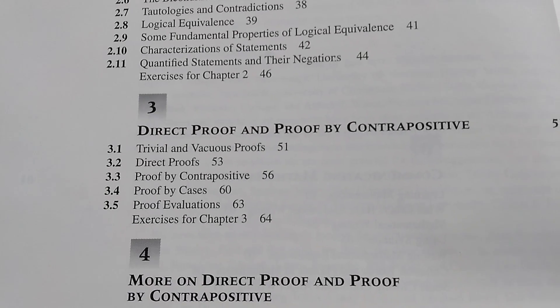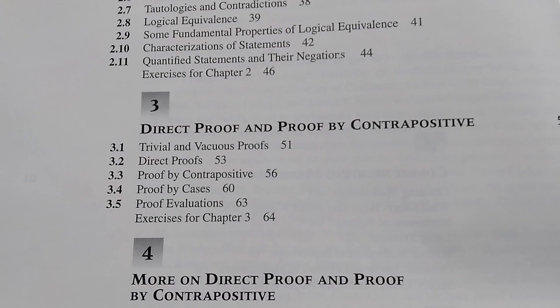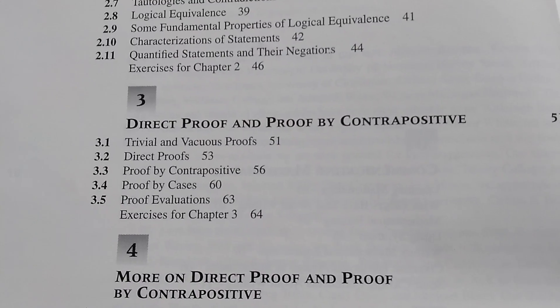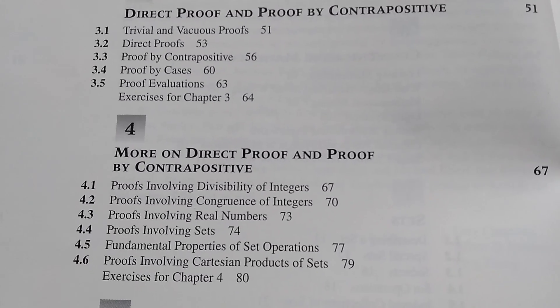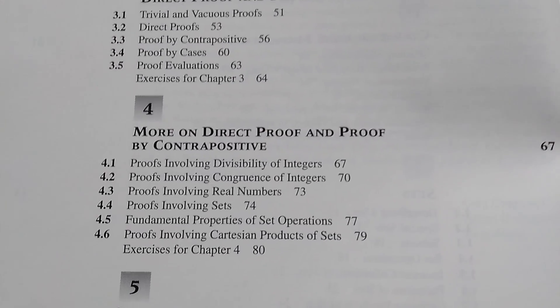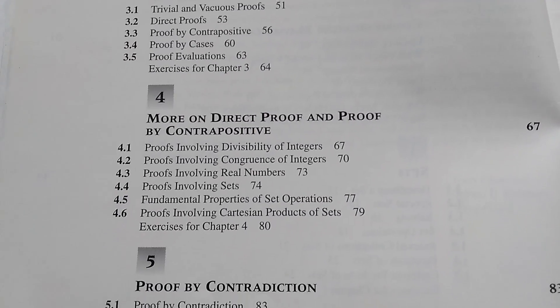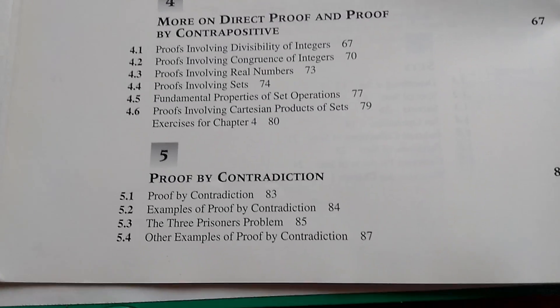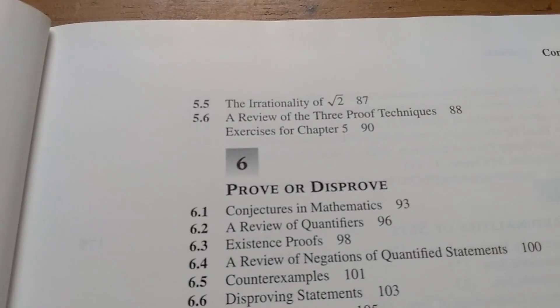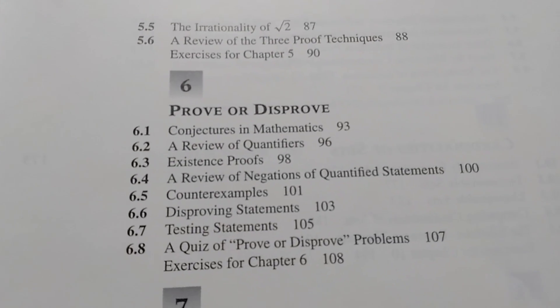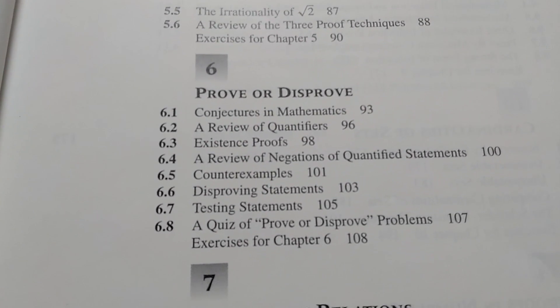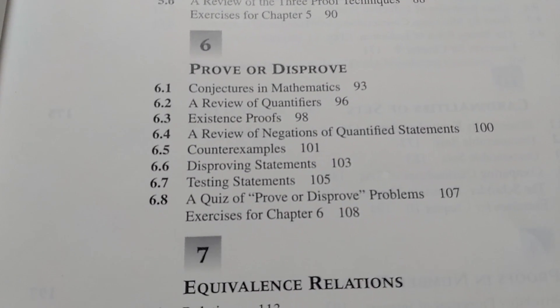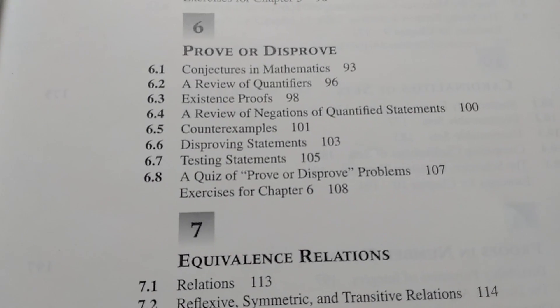And then in chapter three, he jumps into actual proofs. So direct proof and proof by contrapositive. Four is more on direct proof and proof by contrapositive. Lots of really nice examples in the textbook. Five is on proof by contradiction. And six is prove or disprove. They talk about quantifiers, existence proofs, counterexamples, and disproving statements and testing statements.